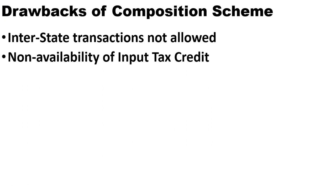The second drawback is that you can't get the benefit of Input Tax Credit. Initially when the GST Act came, the motive was to eliminate double taxation — tax on top of tax. But in the composition scheme, the benefit of Input Tax Credit is not given. Because there is no credit of input tax, the tax burden increases and ultimately the cost to the customer rises. A composition dealer cannot claim input tax credit on any purchase made from a registered taxable person.